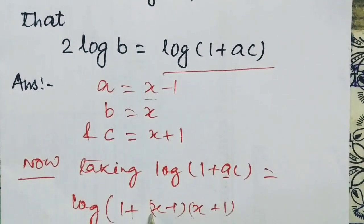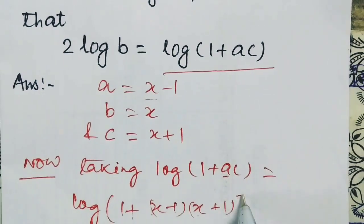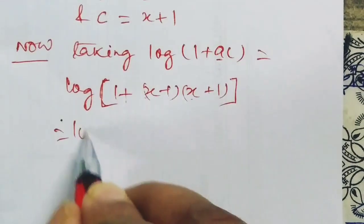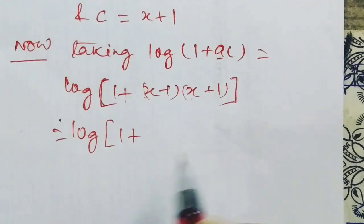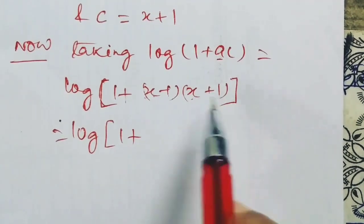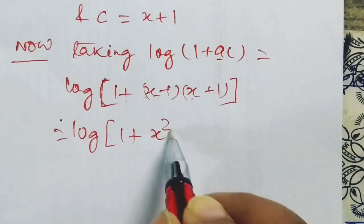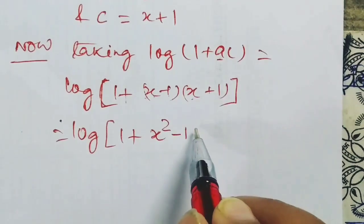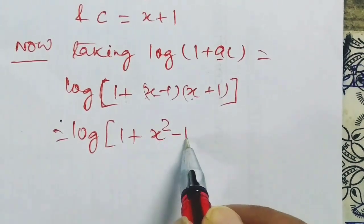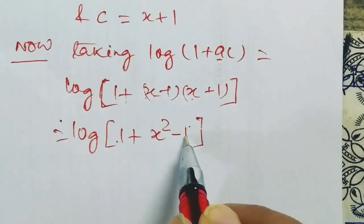This becomes (x - 1) times (x + 1), which expands to x² - 1. So log(1 + x² - 1) equals log(x²).